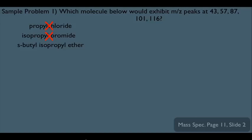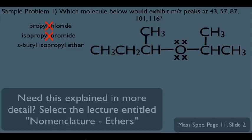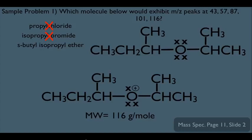Let's confirm S-butyl isopropyl ether. It's worth noting that on an exam you could have ruled out the first two molecules immediately just by checking their molecular ion peaks. For S-butyl isopropyl ether, the molecular ion peak should be at 116 — and that is one of the peaks we're looking for. This is promising.